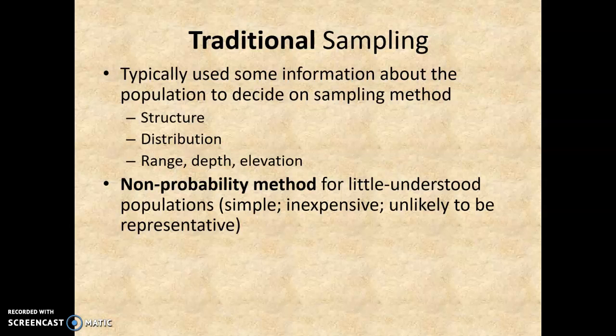There are two different methods: a non-probability method and a probability method. Starting with the non-probability method — if you really truly don't know much about this population, this is how you'd start. It's pretty simple and less expensive. It's unlikely to be perfectly representative because you don't know anything about the population yet, but it's kind of hard to go wrong. So you'd do convenience sampling, meaning you sample every single item you came to without worrying about whether it fits into a particular distribution or structure.